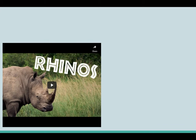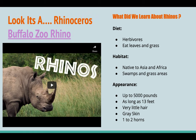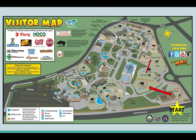I continued the same pattern for each of the seven animals I included — the video with the Buffalo Zoo link, the basic information I wanted each student to know, and then the map showing we're moving to the zebras next.